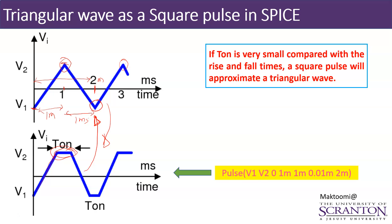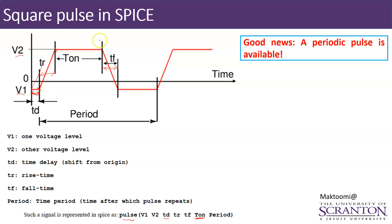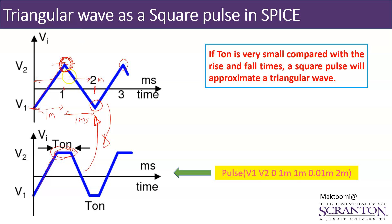This is the strategy we use to approximate a pulse to a triangular waveform. The basic idea is to keep the rise time, fall time, lower voltage level, and higher voltage level the same. The only thing we add is a very small Ton — the on-period for which it is high. If Ton is small enough, the pulse waveform is as good as the triangular waveform.